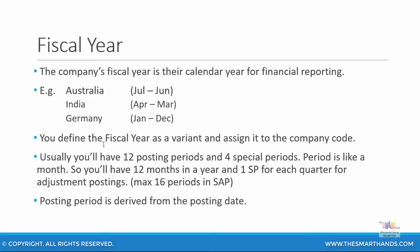You define the fiscal year as a variant and then assign it to the company code. So we create a fiscal year variant and then assign it to the company code. If you are creating a company code in the US, ensure that you create a fiscal year variant from January to December and assign it to the company code. If you are creating a company code in Australia, ensure the fiscal year variant is from July to June. You must match the fiscal year variant to the country where your company code resides to keep it consistent.